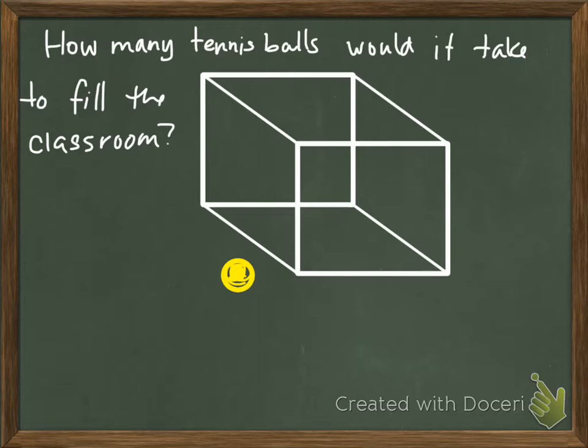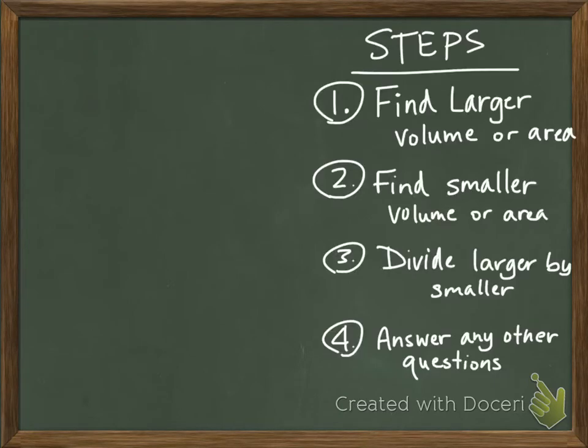This is a Fermi question. So we would have to take the tennis balls, find out their volume. And then we'd have to find out the volume of the classroom, and we'd have to figure it out. So there are kind of some steps that we would take when we're solving these. So I'm going to write these steps out. The first step is you're going to find a larger volume or area. The second one is you're going to find a smaller volume or area. Then you're going to take the large one, divide that by the small one, and then after that, you'll answer any other questions.